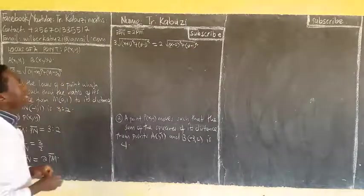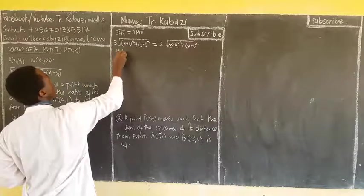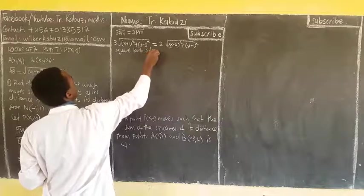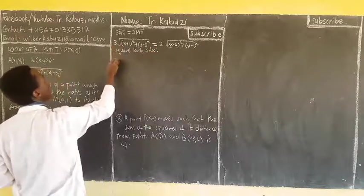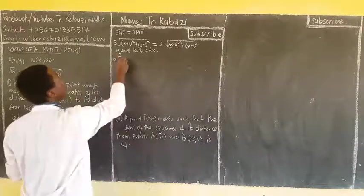So from there, members, we see that to remove this square root, we are going to square both sides.